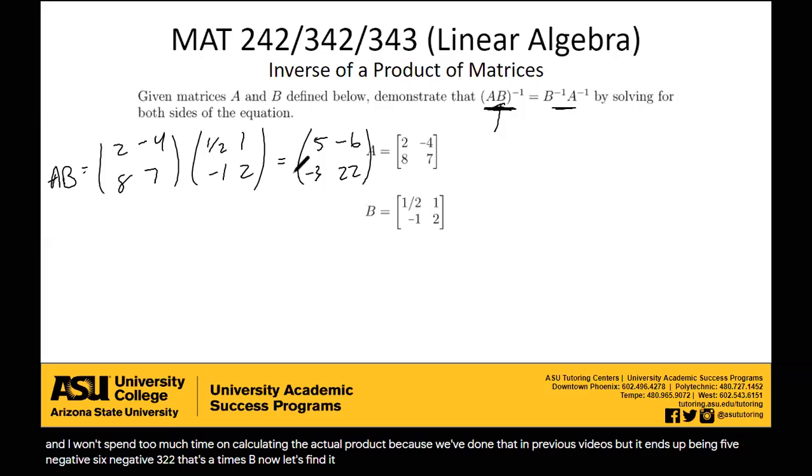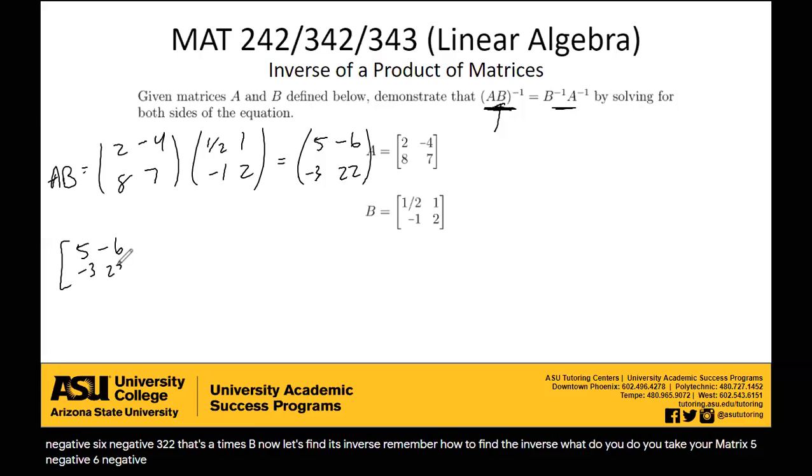Now let's find its inverse. So remember how to find the inverse? What do you do? You take your matrix, 5, negative 6, negative 3, 22. You augment with your identity, and then you reduce row echelon form that.